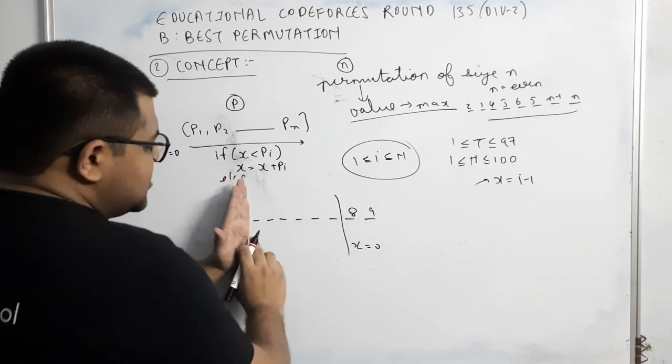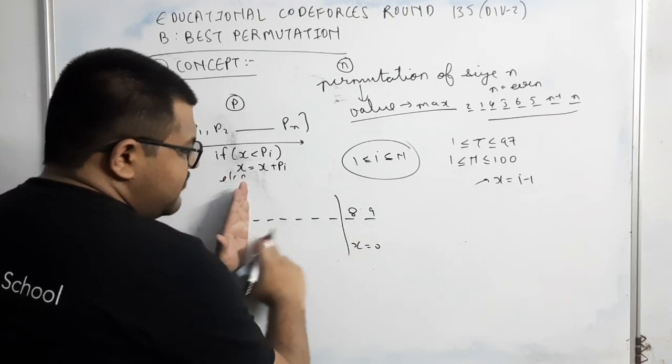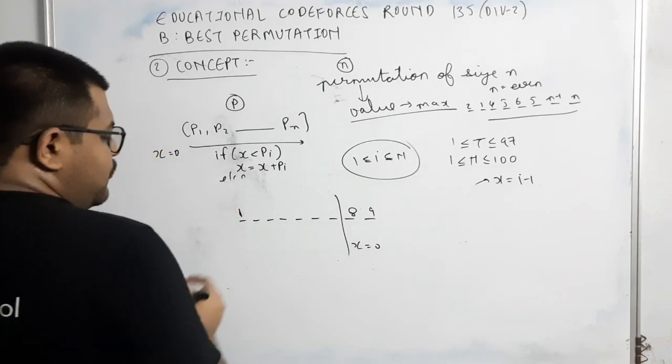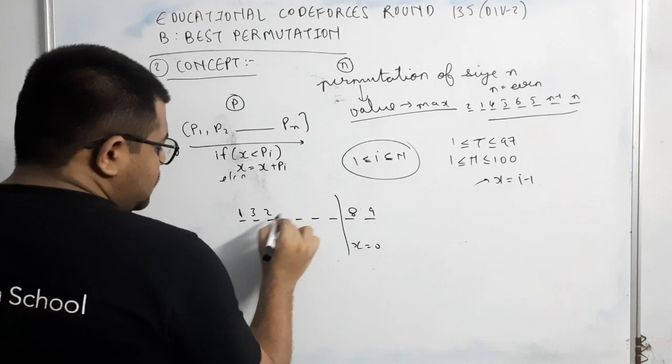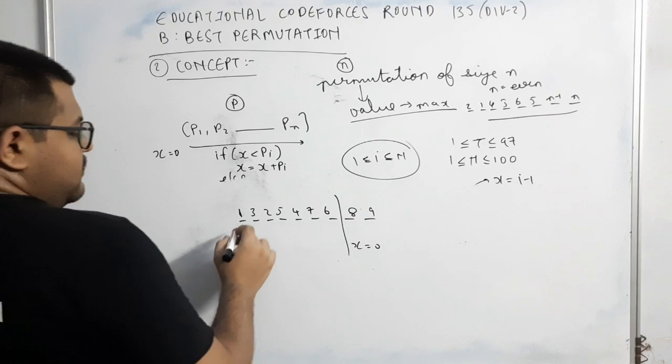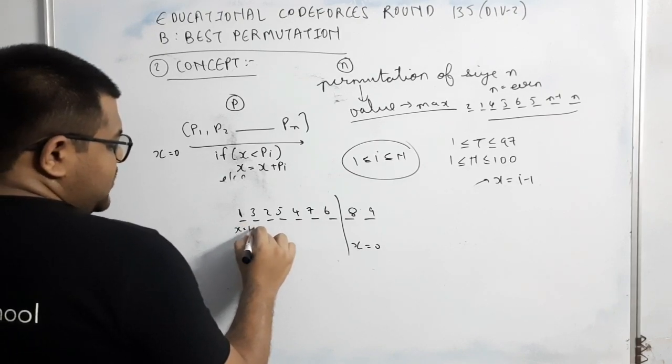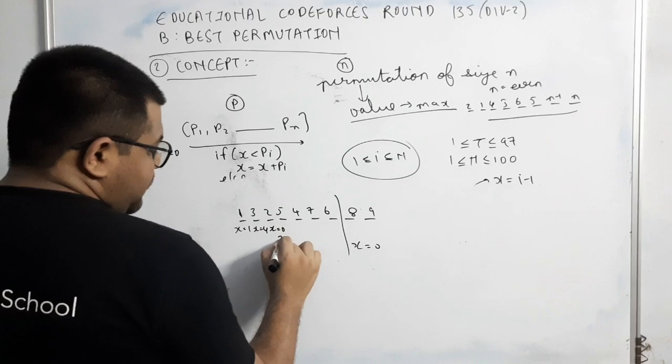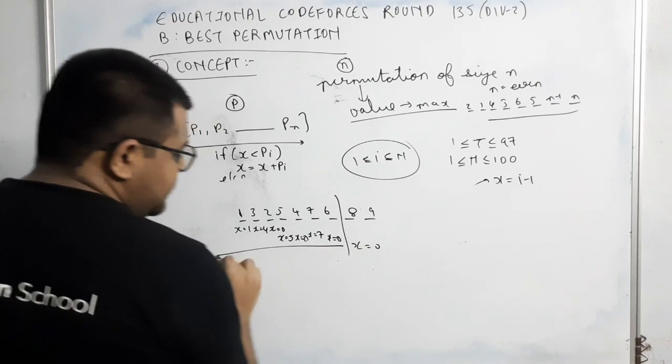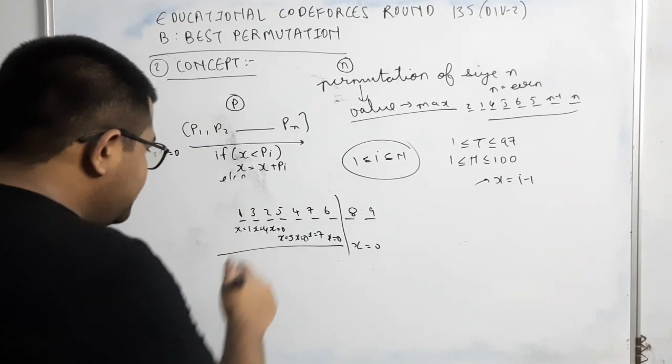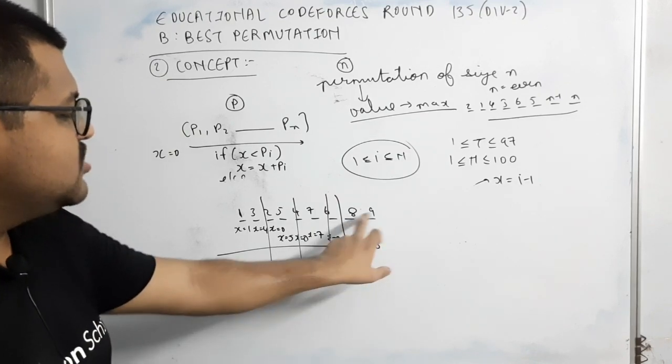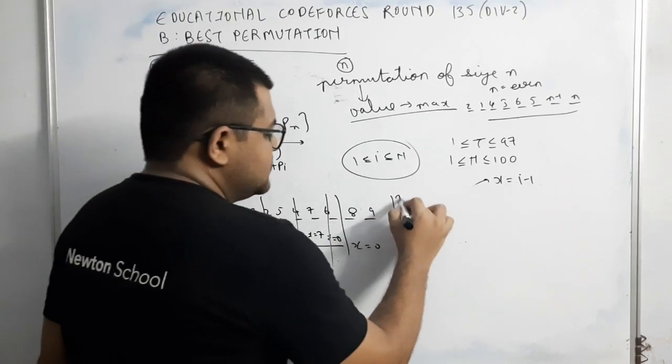We can take one here. Now, the remaining question is converted into n equal to even. Can you see that? अब, n equal to 8 elements में convert हो गया. So, what we can do now? 3, 2, 5, 4, 7, 6. So, what will happen? यहां पे x की value 1, यहां पे x की value 4, यहां पे x की value 0, फिर x की value 5, फिर x की value 0, फिर x की value 7, फिर x की value 0. So, by the time we reach here, x would be equal to 0, and then, 8 plus 9, our answer would be 17.